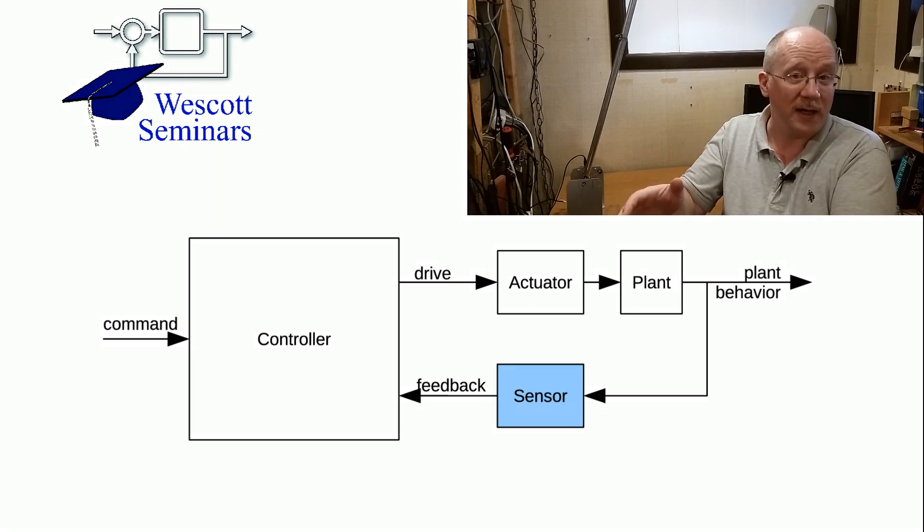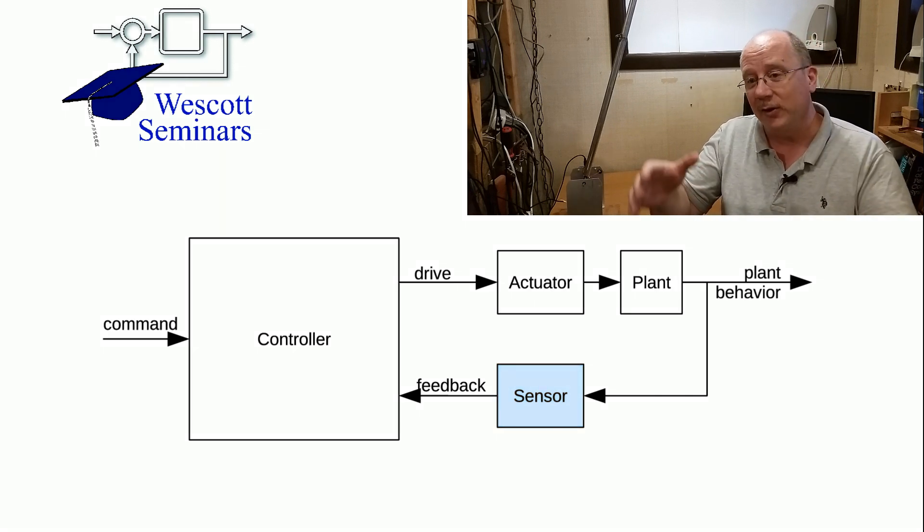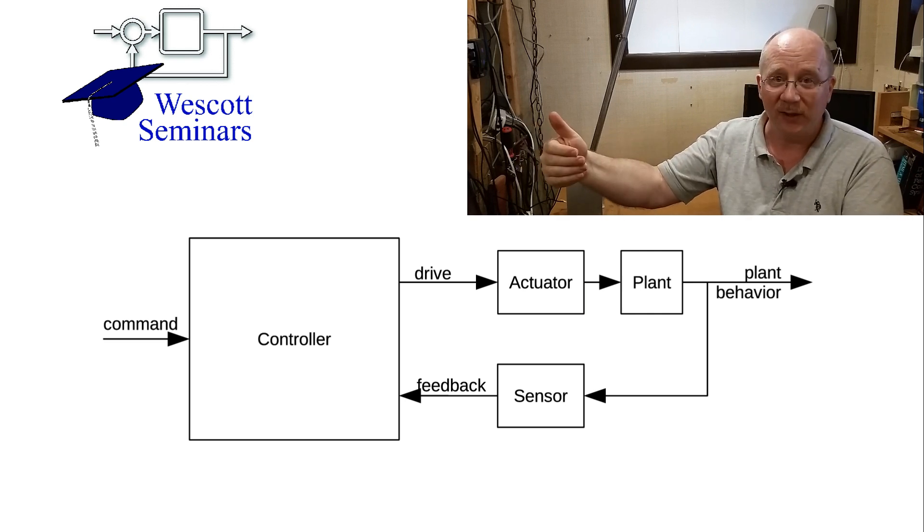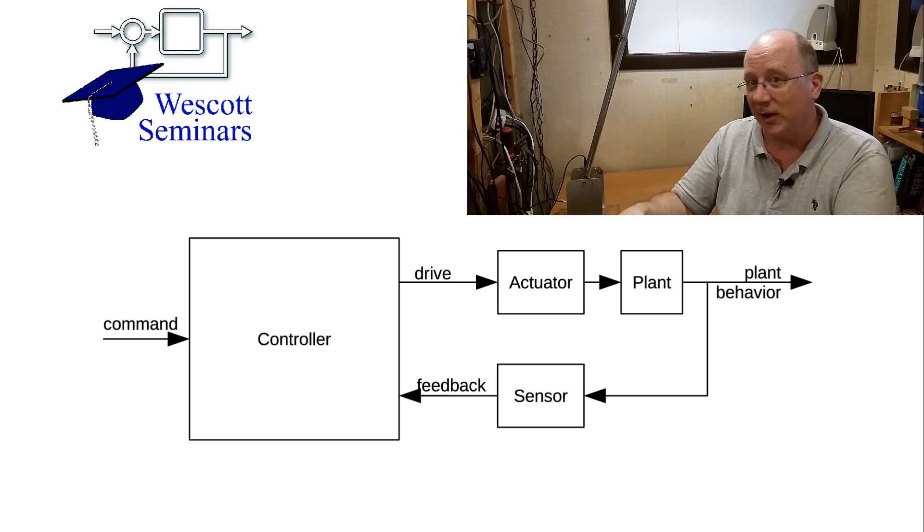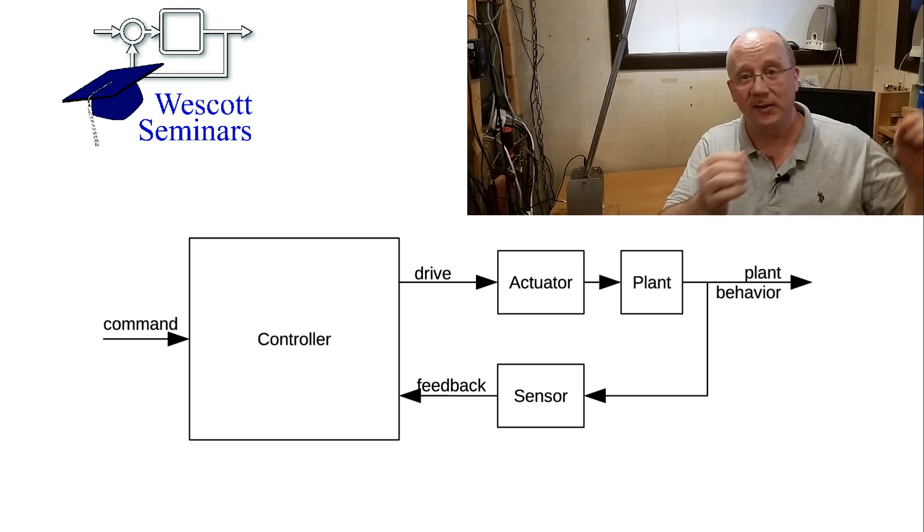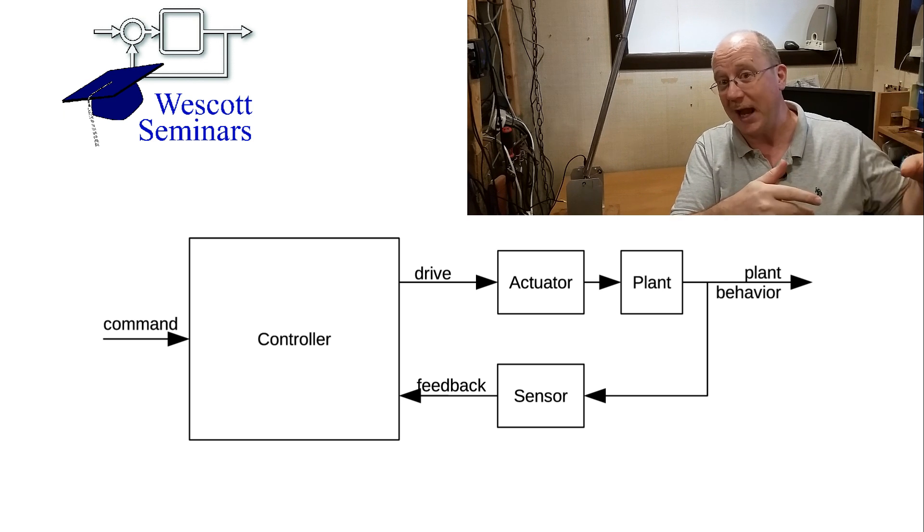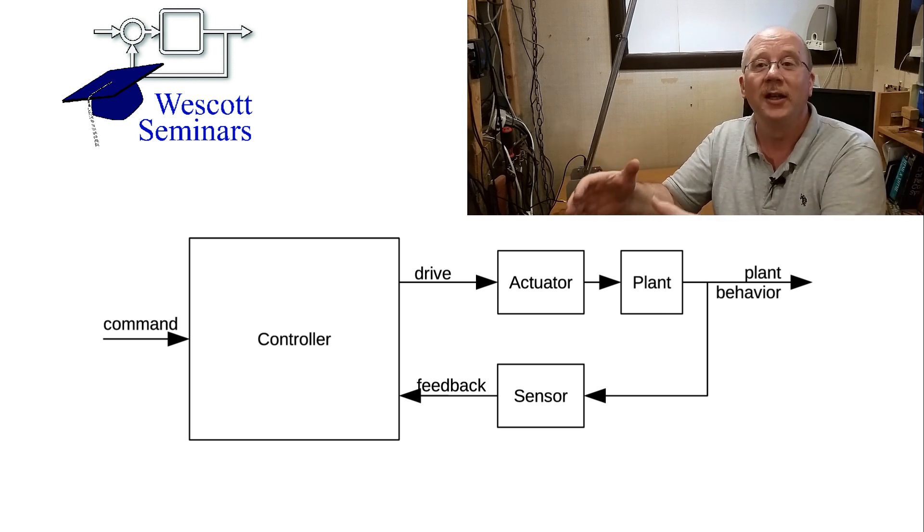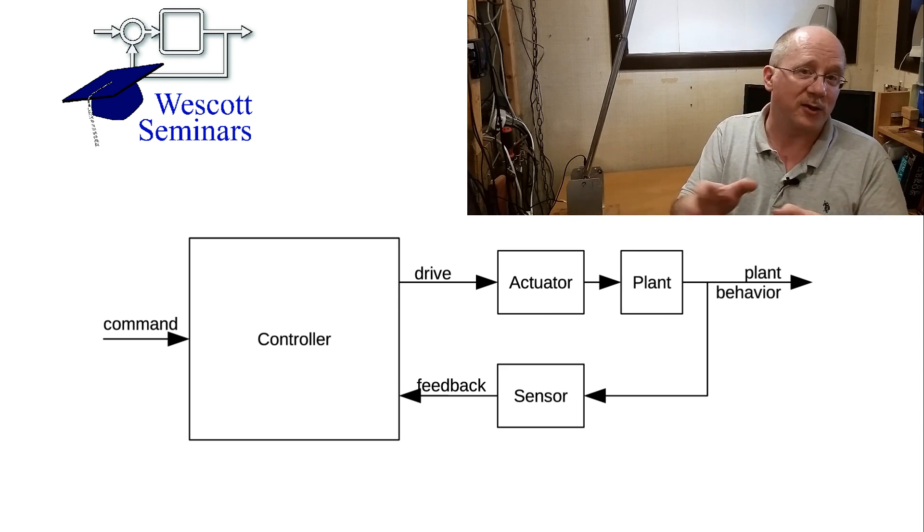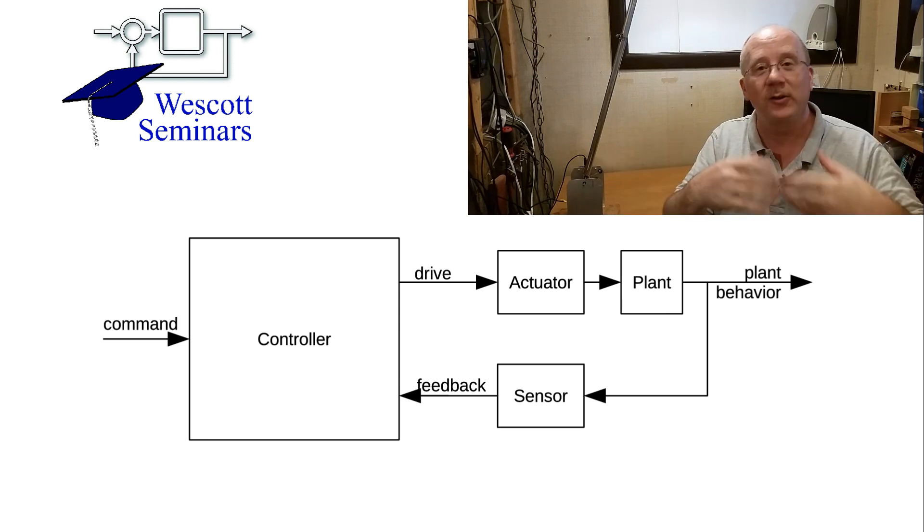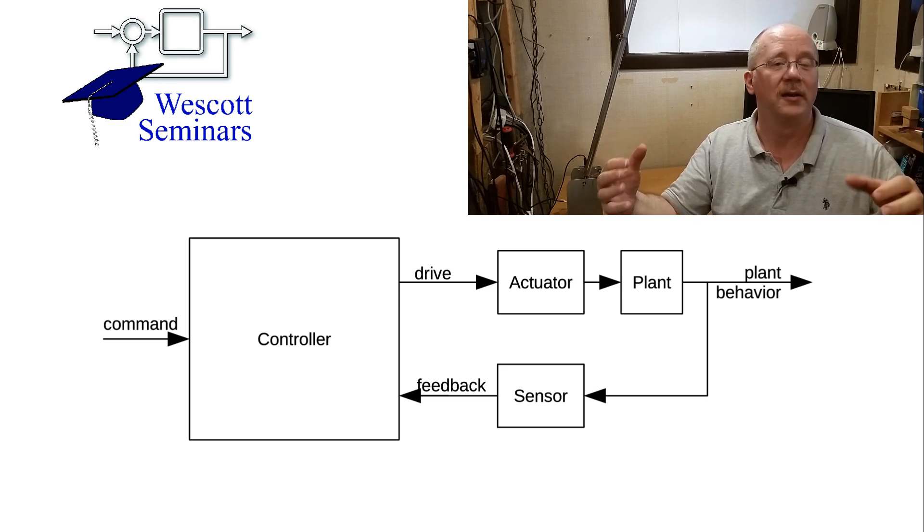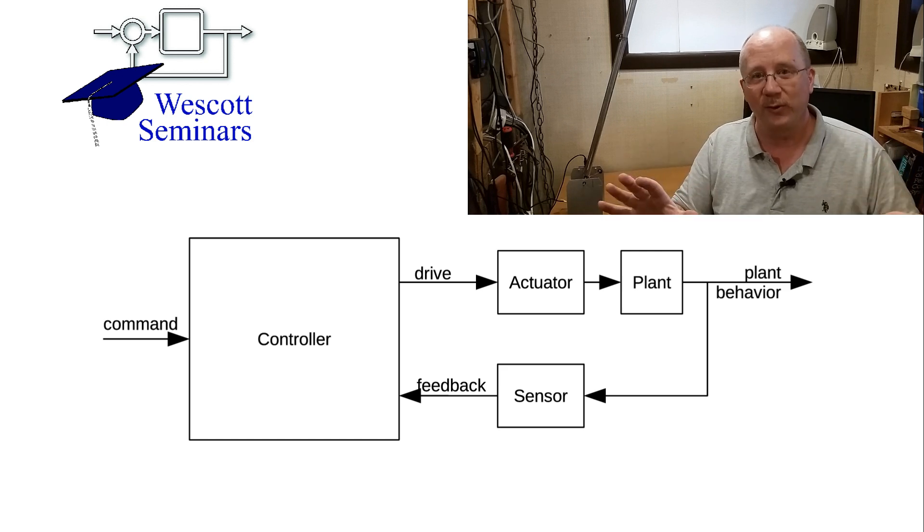And then the output of that sensor goes back into the controller. And the controller then takes the output of the sensor, and it takes the commanded value, and it remembers what it's been doing before, and it uses that to compute the next input to the actuator. So it computes a drive value for the actuator, and it sends it out to the actuator. The actuator takes it in, and that closes the loop. And then you have this continuous closed-loop process that is implementing your control system.